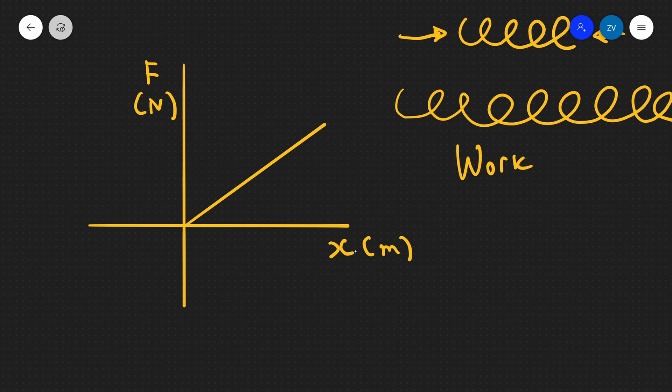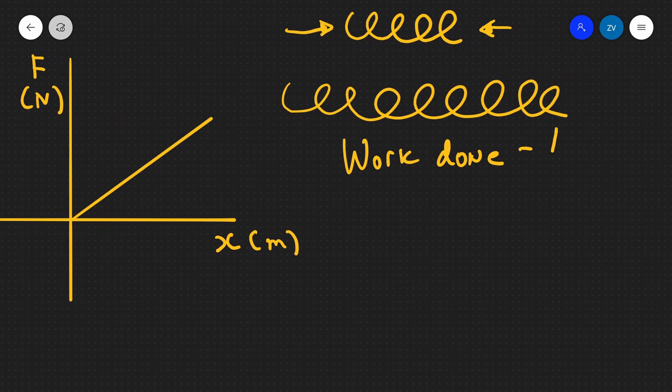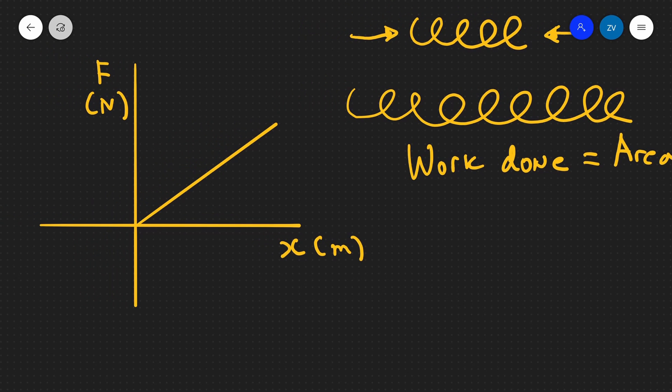The work done is equal to the area underneath the graph. Additionally, remember from our mechanics lessons, work done is equal to the change in energy of the system. The elastic potential energy is the change of energy in this case.